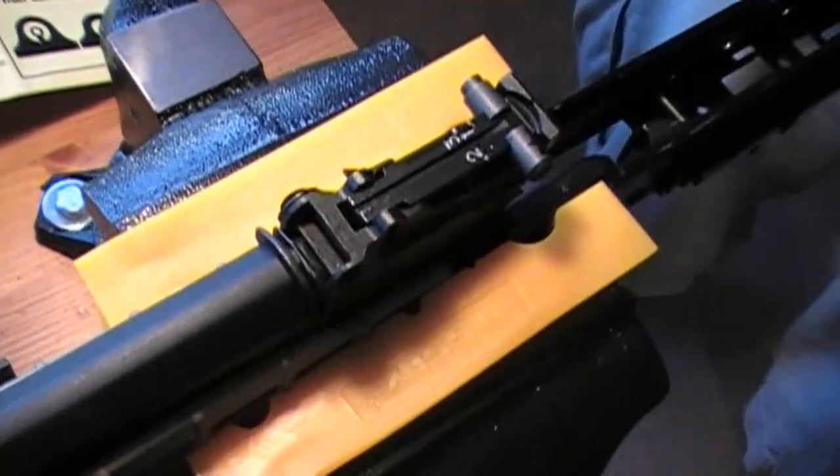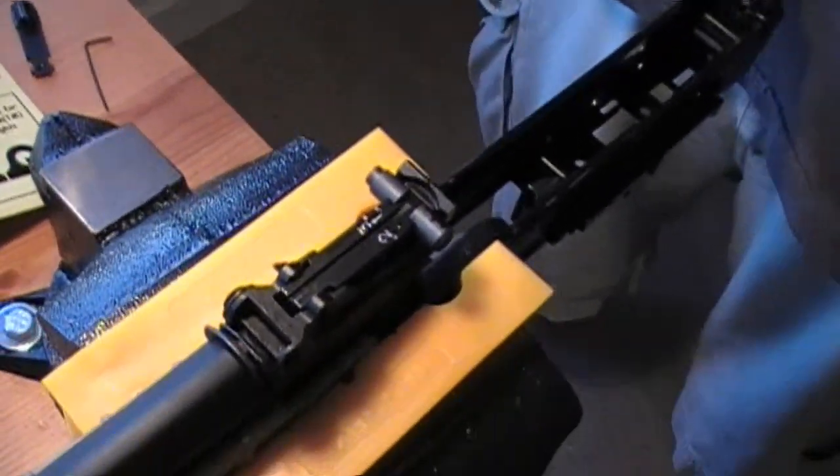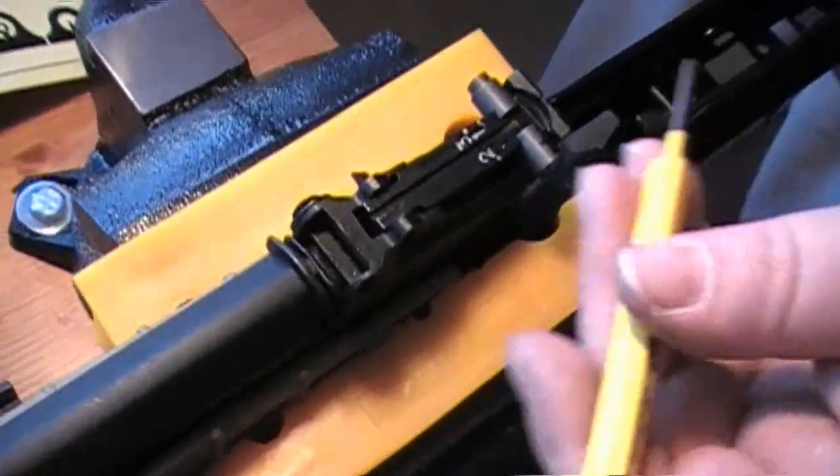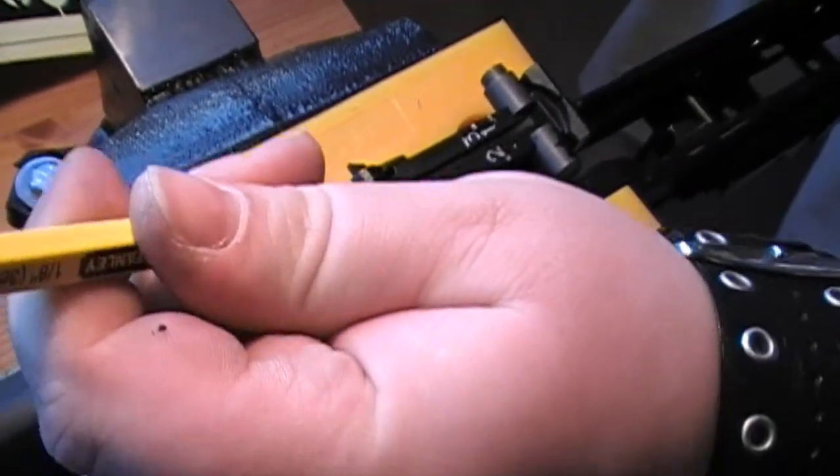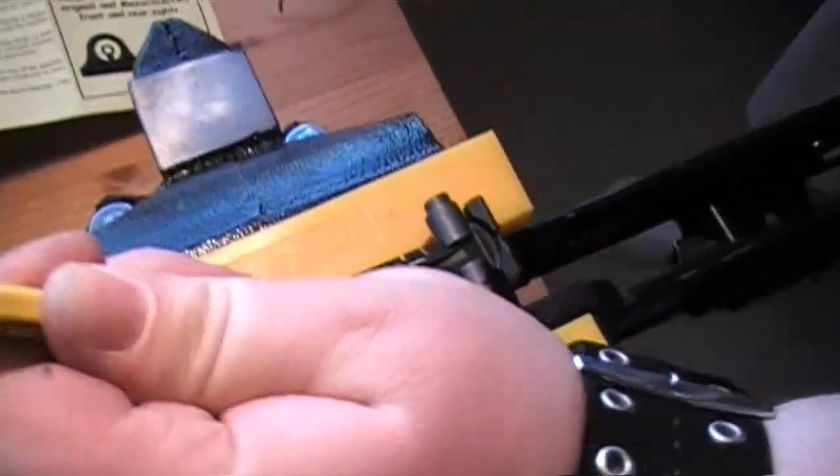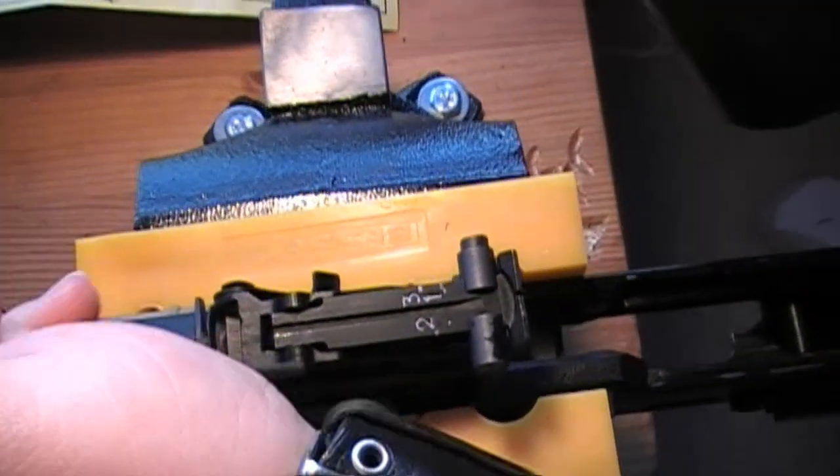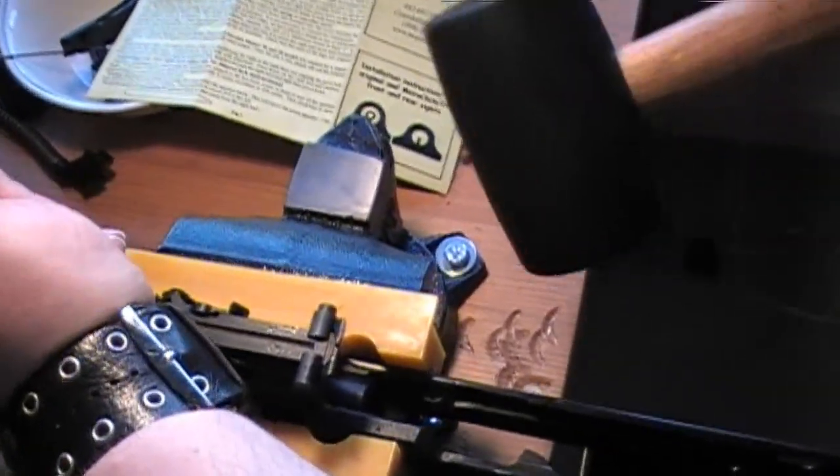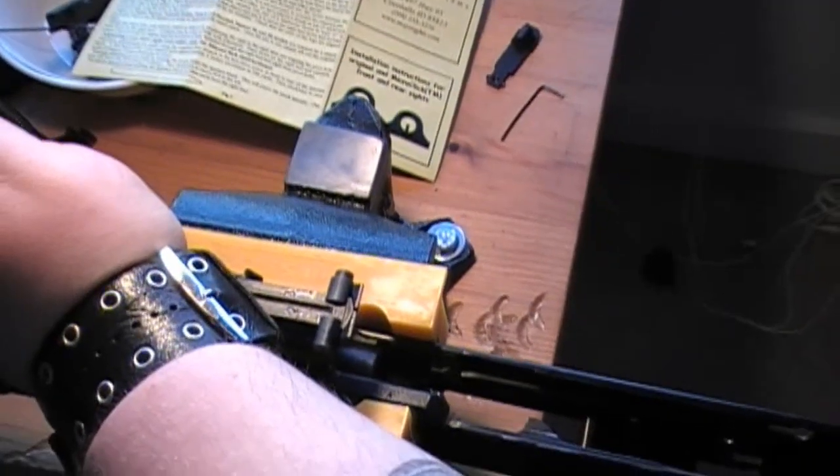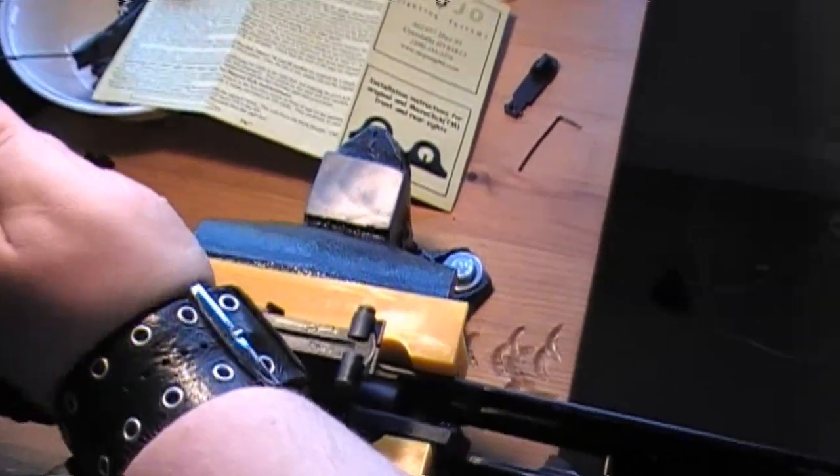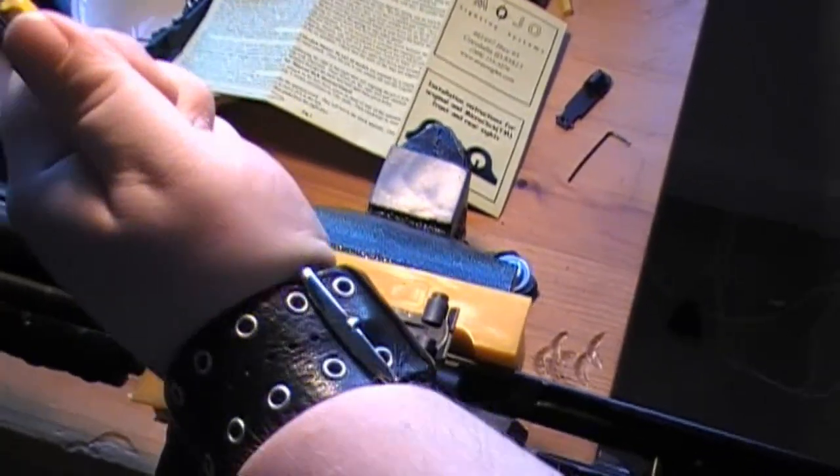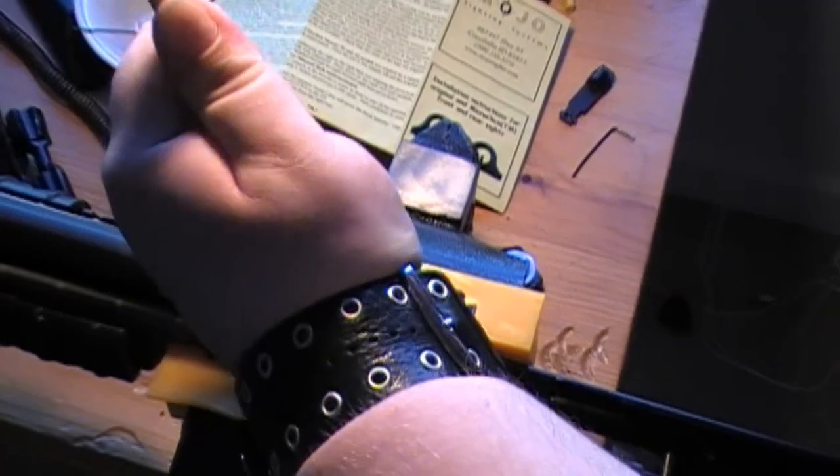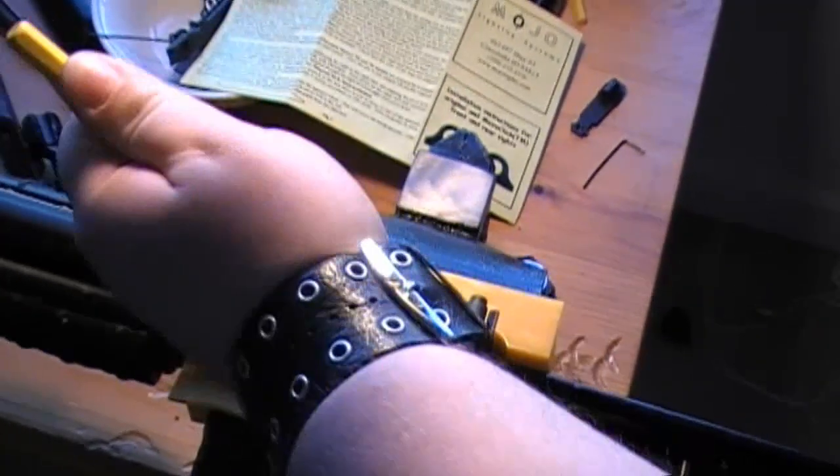We're right in the middle of our Saiga 223 customization, so we thought we should show this to you guys first. You want to take a punch here, just place it at the front of the sight, and you can press in a little bit. Then take a hammer here.